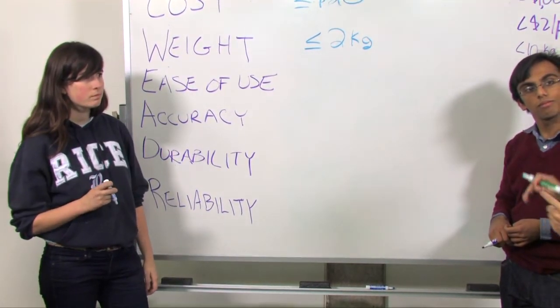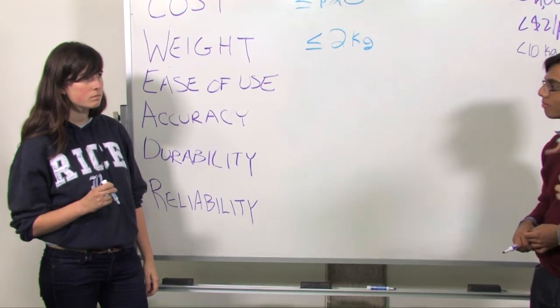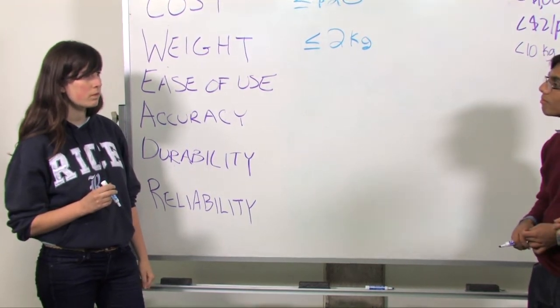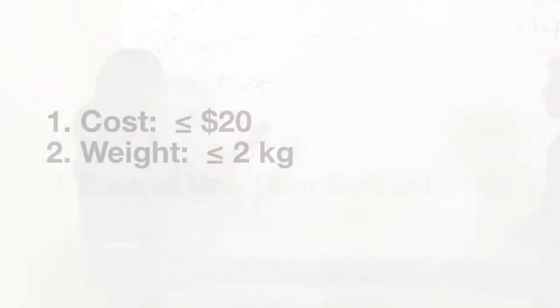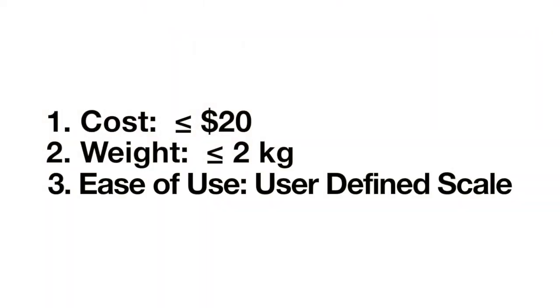Yeah, that's a very broad amount of aspects that we're going to be defining. So I think if we went more towards a user-based scale to define ease of use, I think that might be better. We should probably come back to that since it's a bit harder to define numbers. Let's put user-defined scale for now.